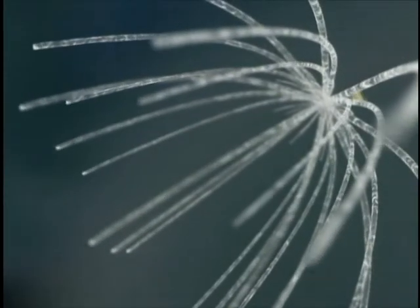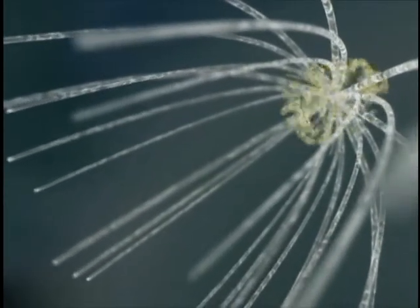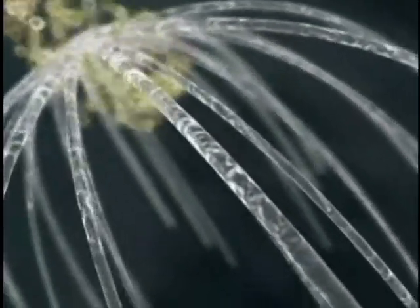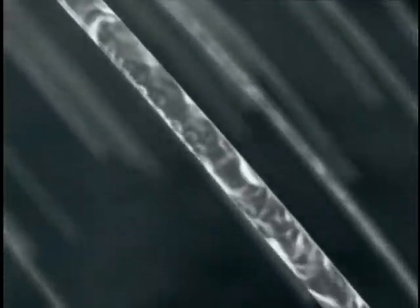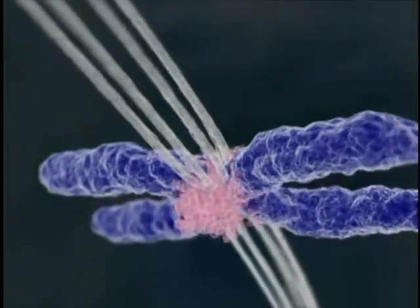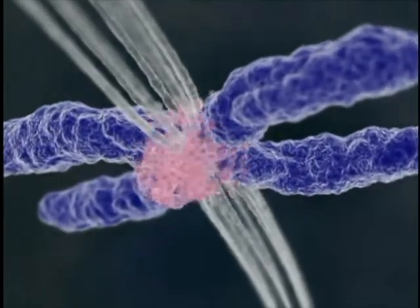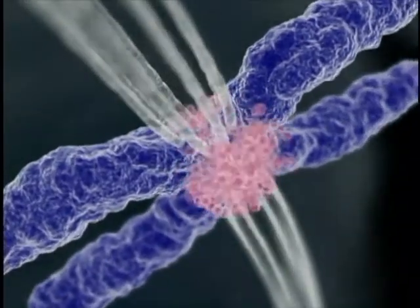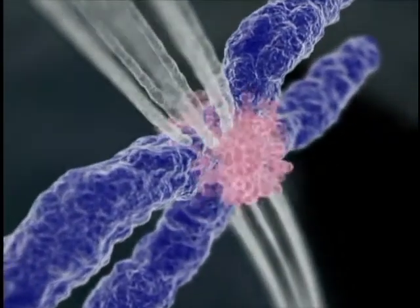At this stage, key roles are played by the aurora kinases. Aurora A is thought to act at the spindle poles. Aurora B acts at the kinetochores, ensuring that the chromosomes are correctly aligned to the mitotic spindle. It also has functions in cell division.